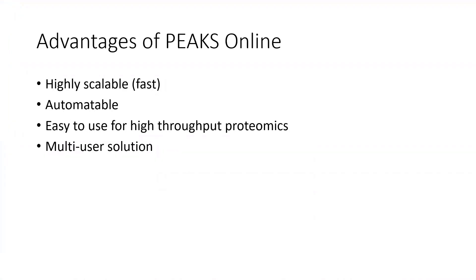So what are the advantages of Peaks Online? Peaks Online is very fast, it's automatable, and it's easy to use for high-throughput proteomics. We try to limit the amount of button clicks that you have to do with Peaks Online, and it's also great for having multiple users able to search jobs on a single computer.